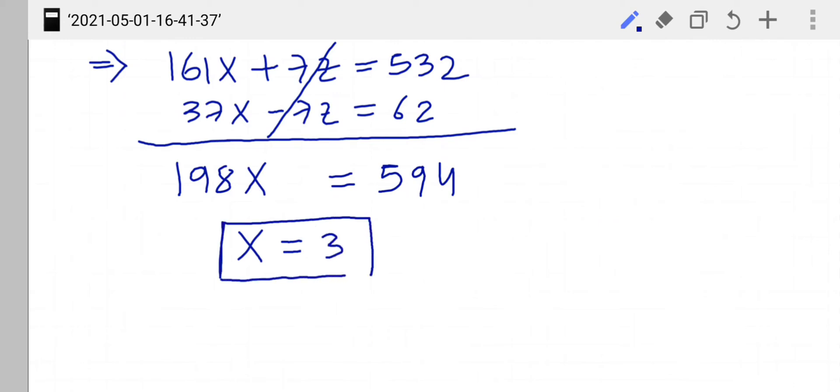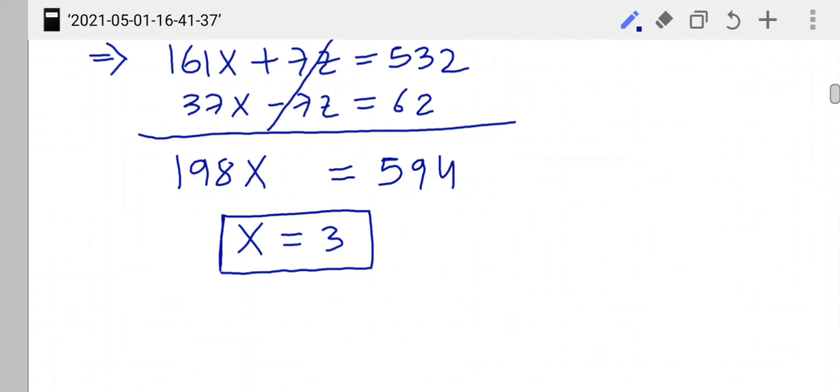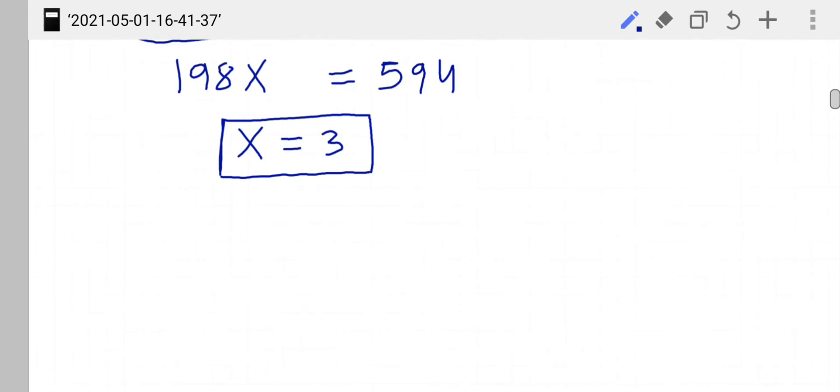Now if we put this value in equation 1 and 2, what we will get? 6 minus 5y plus 3z equals to 2, and 21 plus y minus 2z equals to 12. And now if I simplify, they will become...